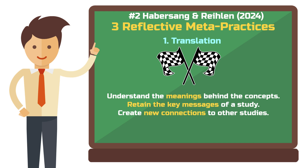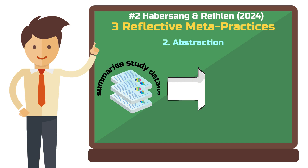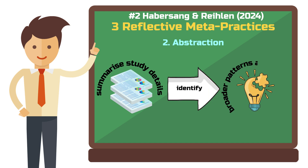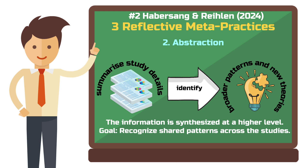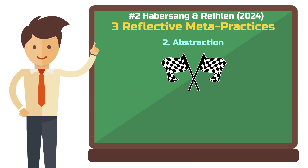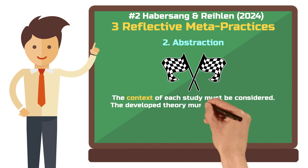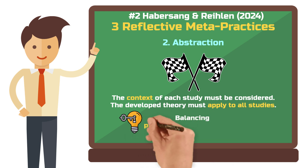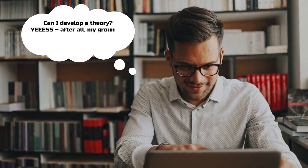Abstraction involves distilling the details of individual studies to identify broader patterns and overarching theories. It's about lifting the analysis to a higher level, enabling you to see similarities across studies. When abstracting, it's essential to consider the unique context of each study while developing theories that apply across multiple cases. Striking the right balance between detail and generalization is key. Developing theories isn't unlike other methods such as grounded theory or theoretical literature reviews.